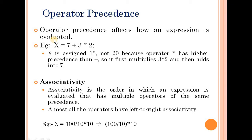In the expression 7 plus 3 into 2, we have two operators: addition and multiplication. What is the operator with higher precedence? The multiplication operator has higher precedence. So we consider 3 into 2 first.